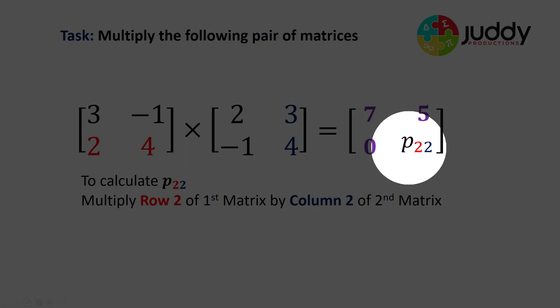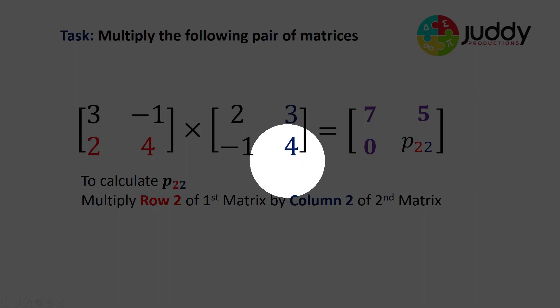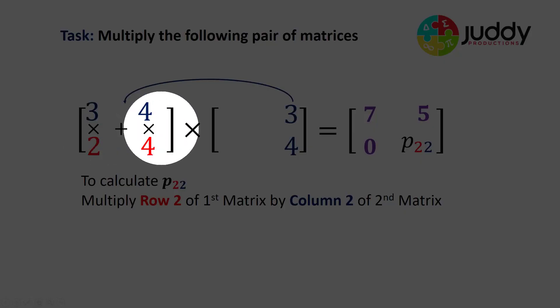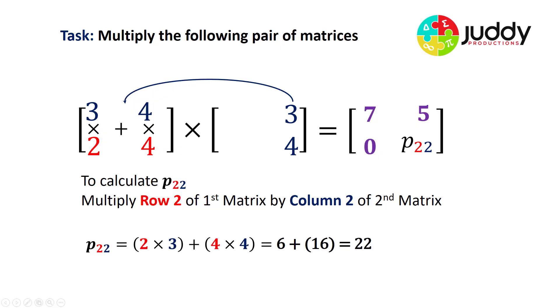Finally, element P22. That involves row two of matrix one and column two of matrix two. We'll remove the other elements. Move column two above row two. Multiply the values. So we have three by two and four by four. We add those products together and we end up with a value for element P22 of 22.